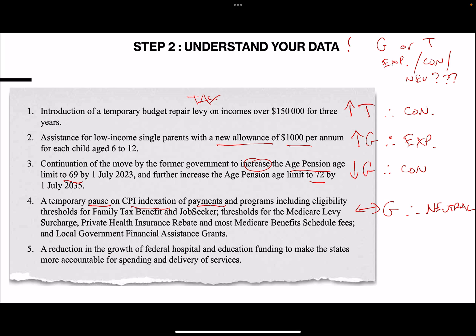The final one is pretty straightforward: a reduction in the growth of hospital and educational funding to make the states more accountable. A reduction in growth of funding - that's going to be a drop in G. And if it's a drop in G, therefore it's contractionary.